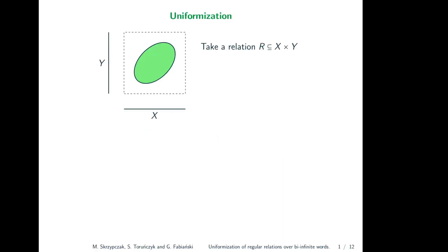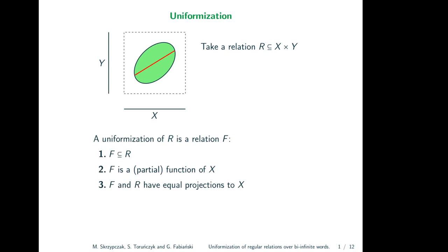Let's start with uniformization. We pick two sets x and y and take some relation r between them. This relation is visualized by a green subset. We say that another relation f uniformizes r if three conditions hold: f must be a subrelation of r, f must be a partial function from x, and these two relations have equal projection to x. Equivalently, for each horizontal slice with non-empty intersection with the green set, the slice contains exactly one red point.